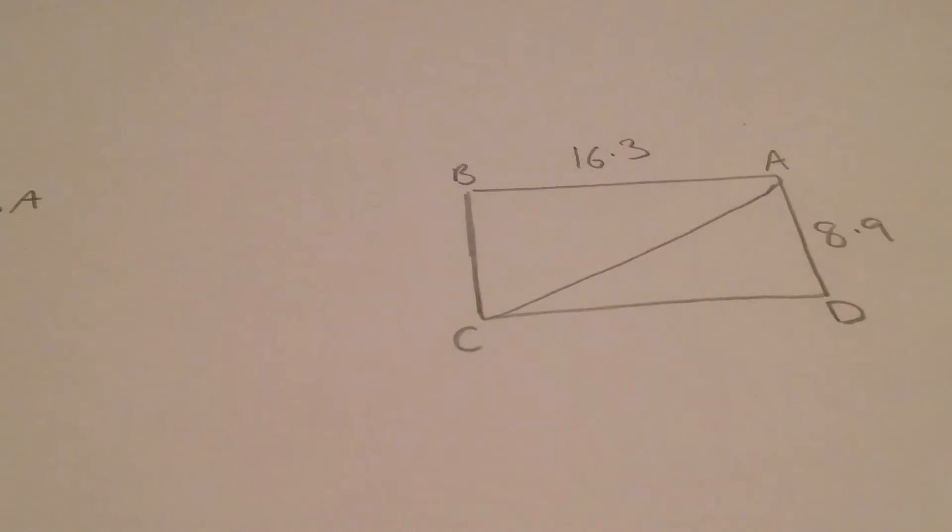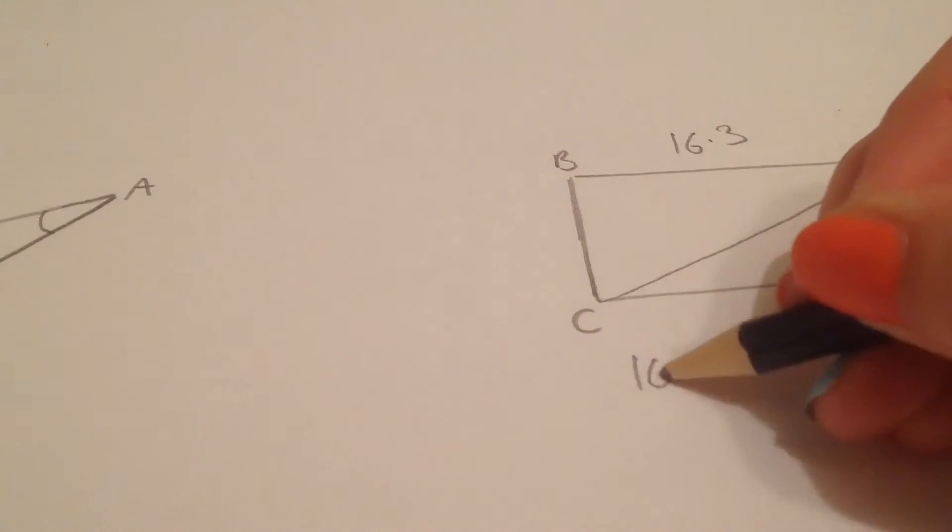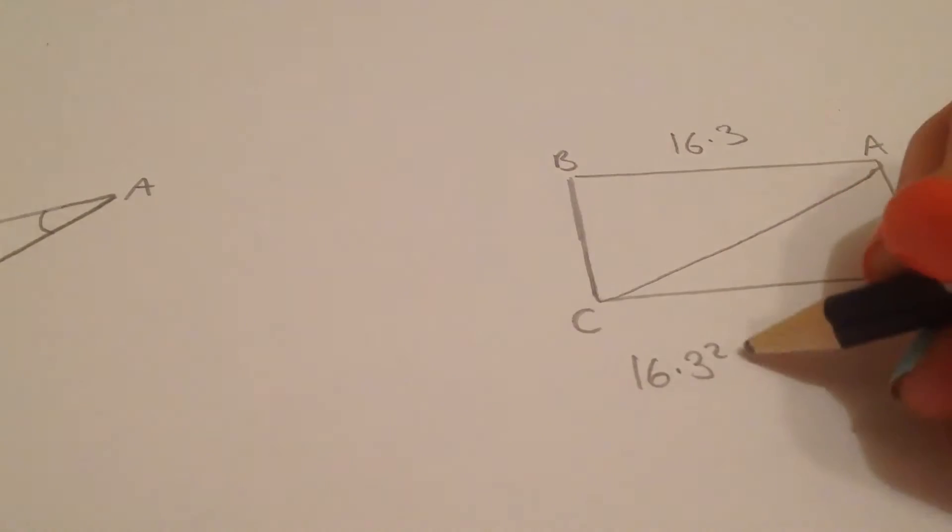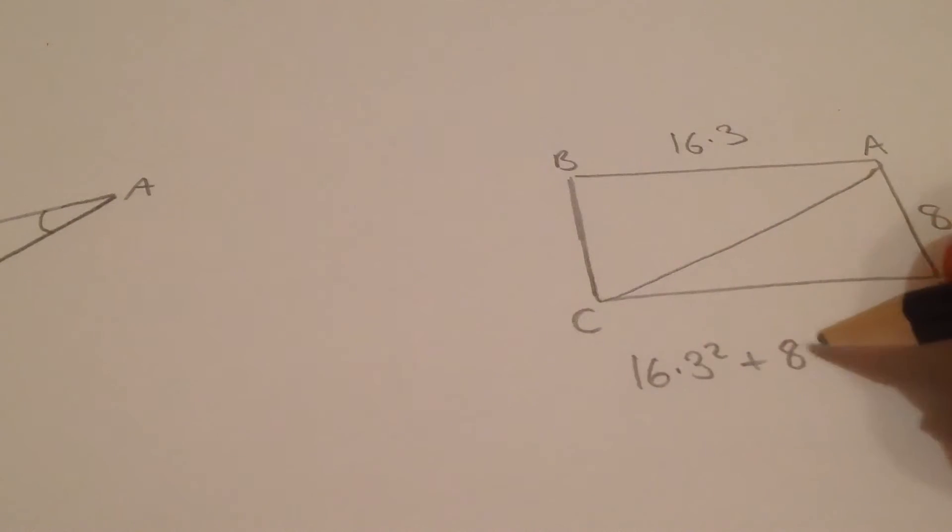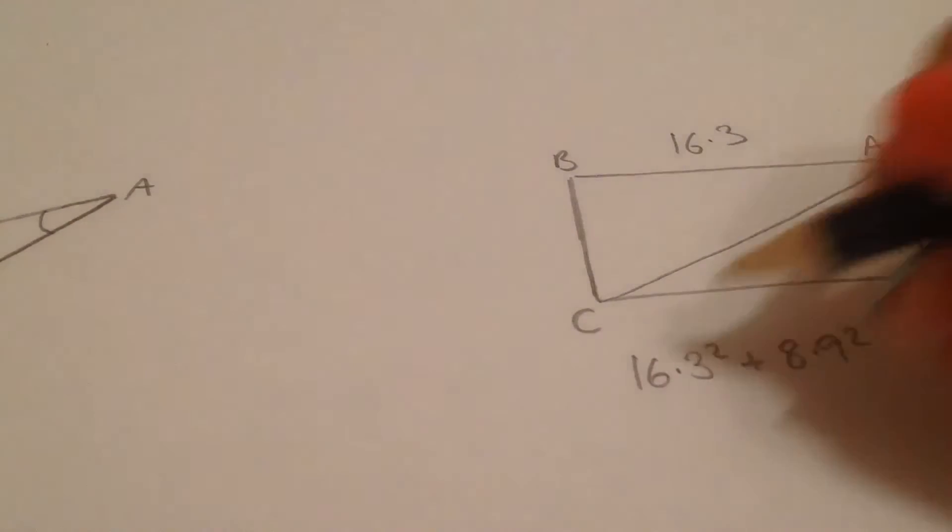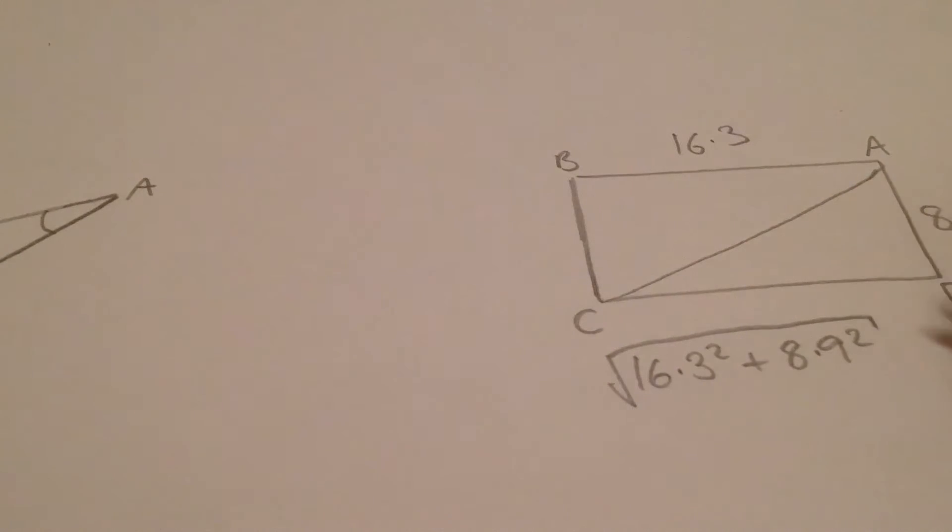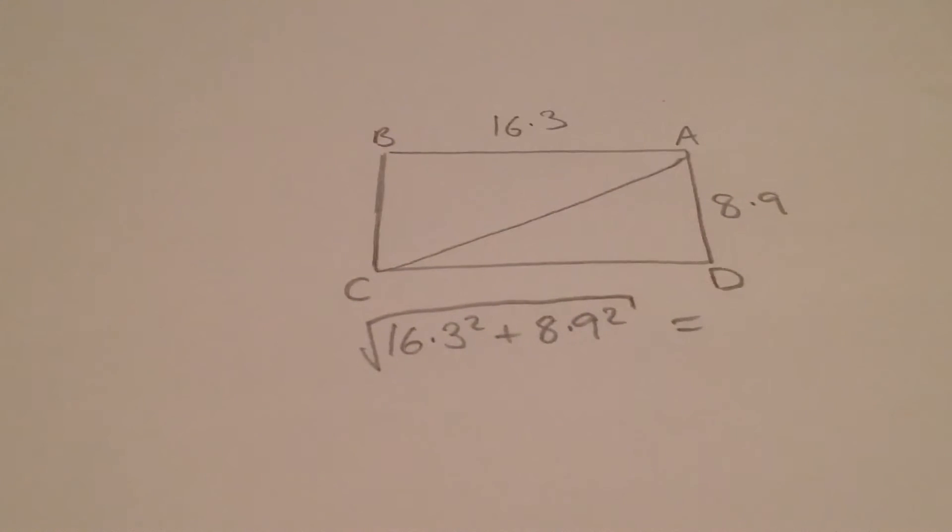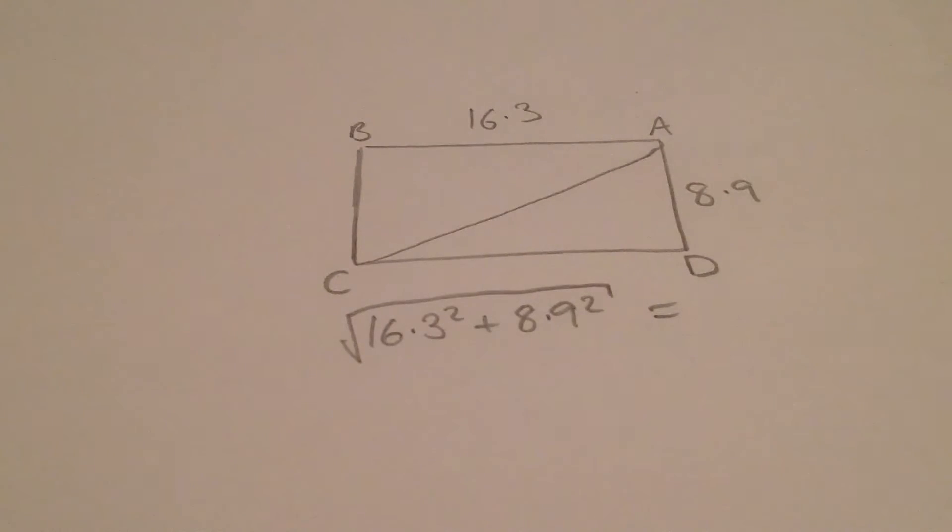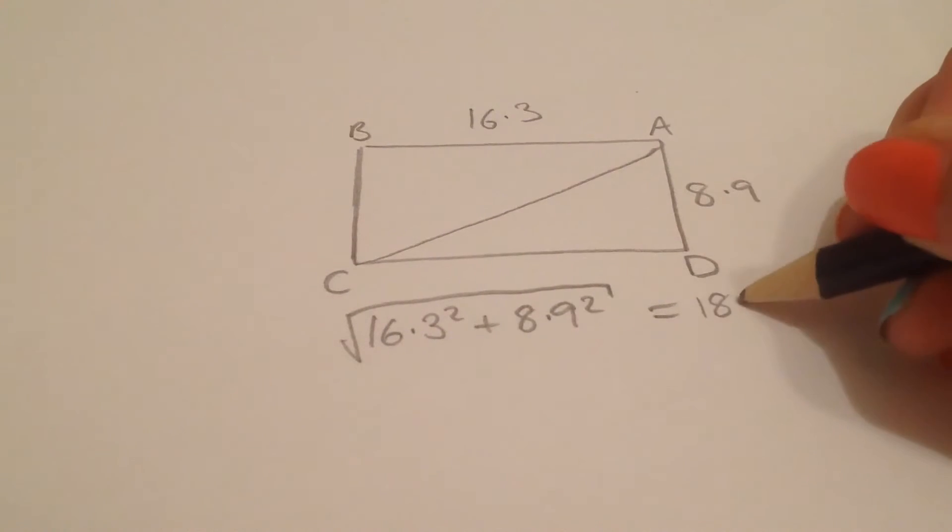I'm going to use Pythagoras' theorem. 16.3 squared plus 8.9 squared, and then I'm going to square root that. I'm doing it in one go because quite frankly, it's 10 o'clock at night. I'm going to go home. Go home? Go to bed. I am home. The square root of that is 18.57.